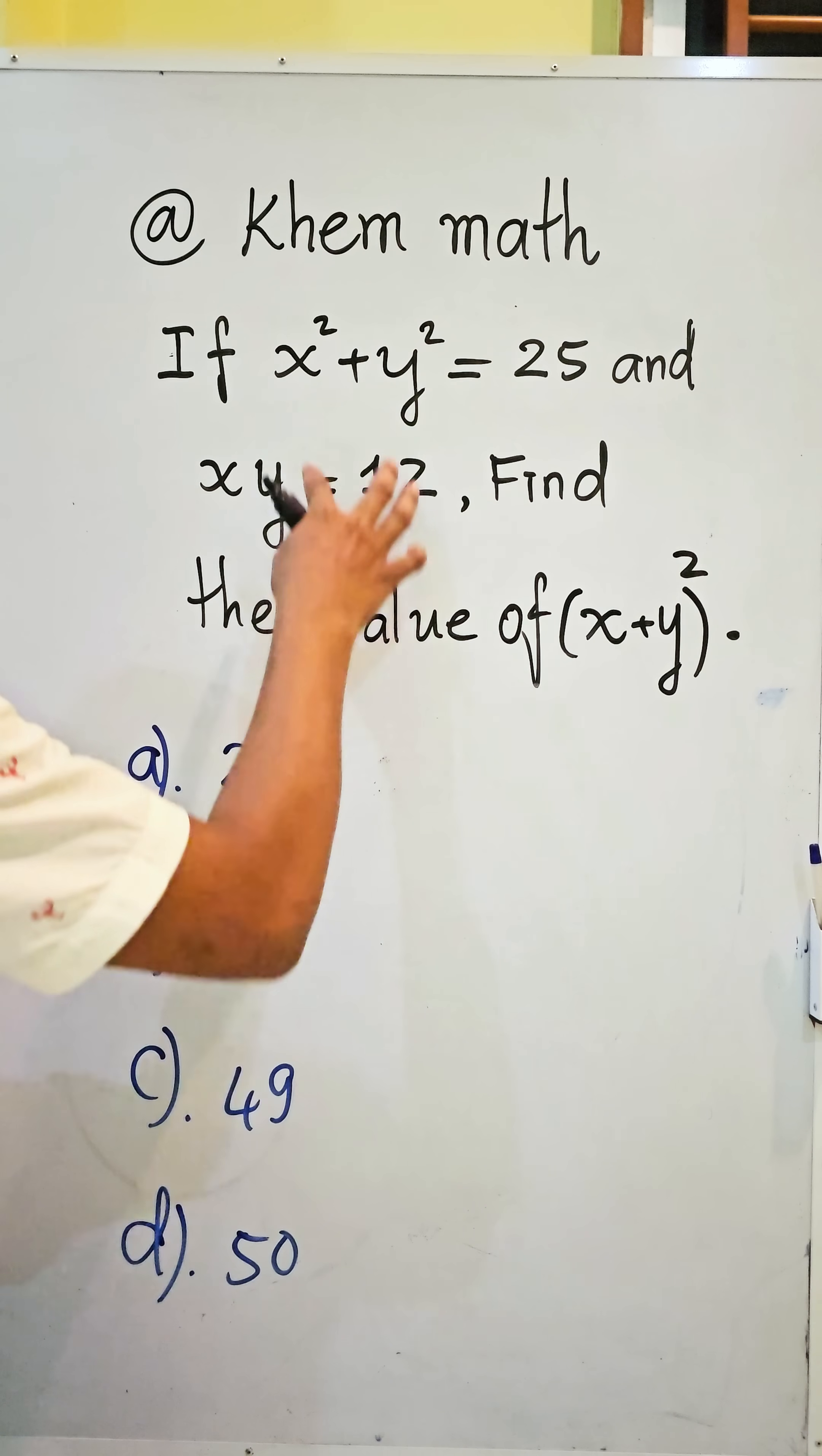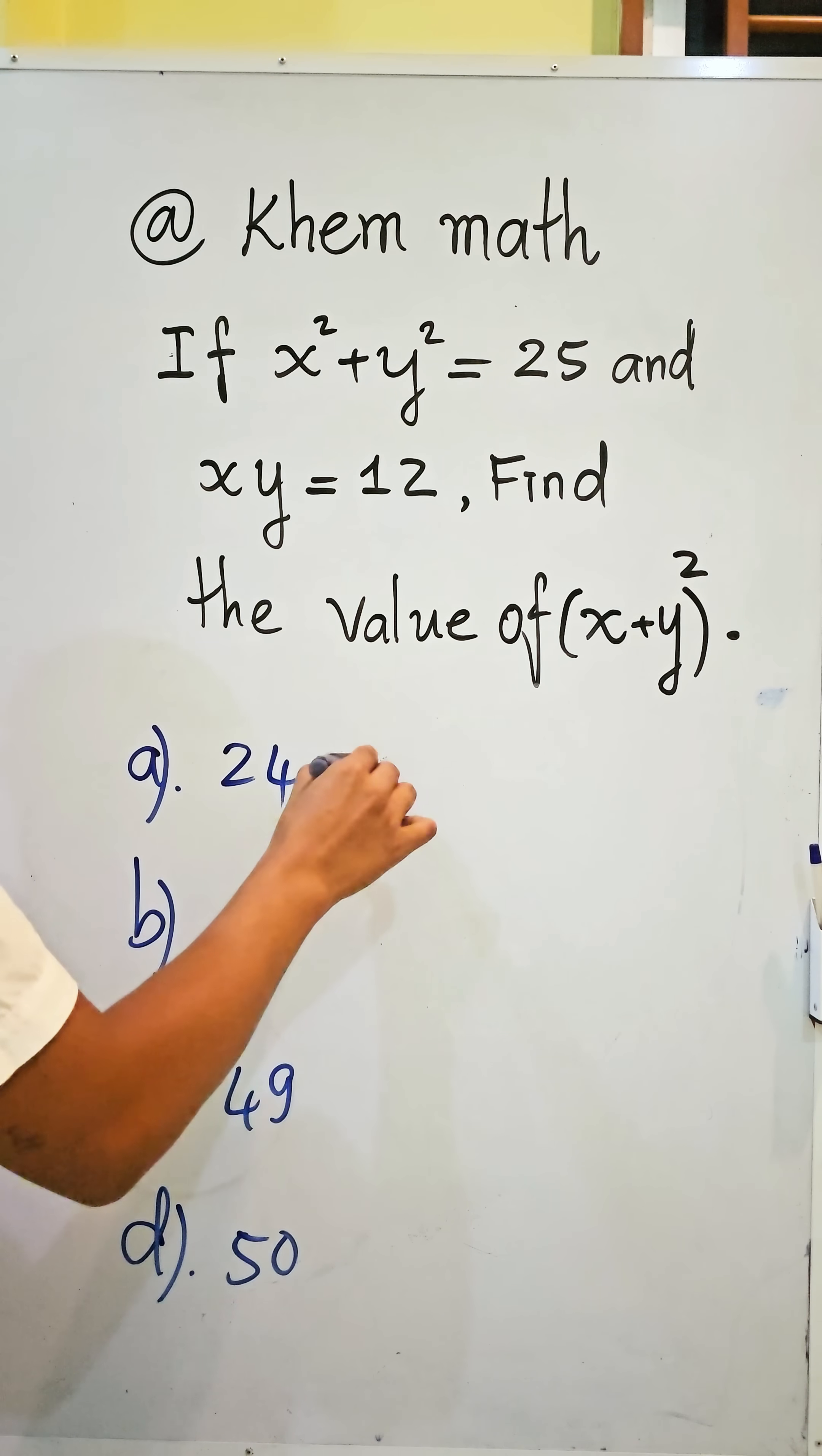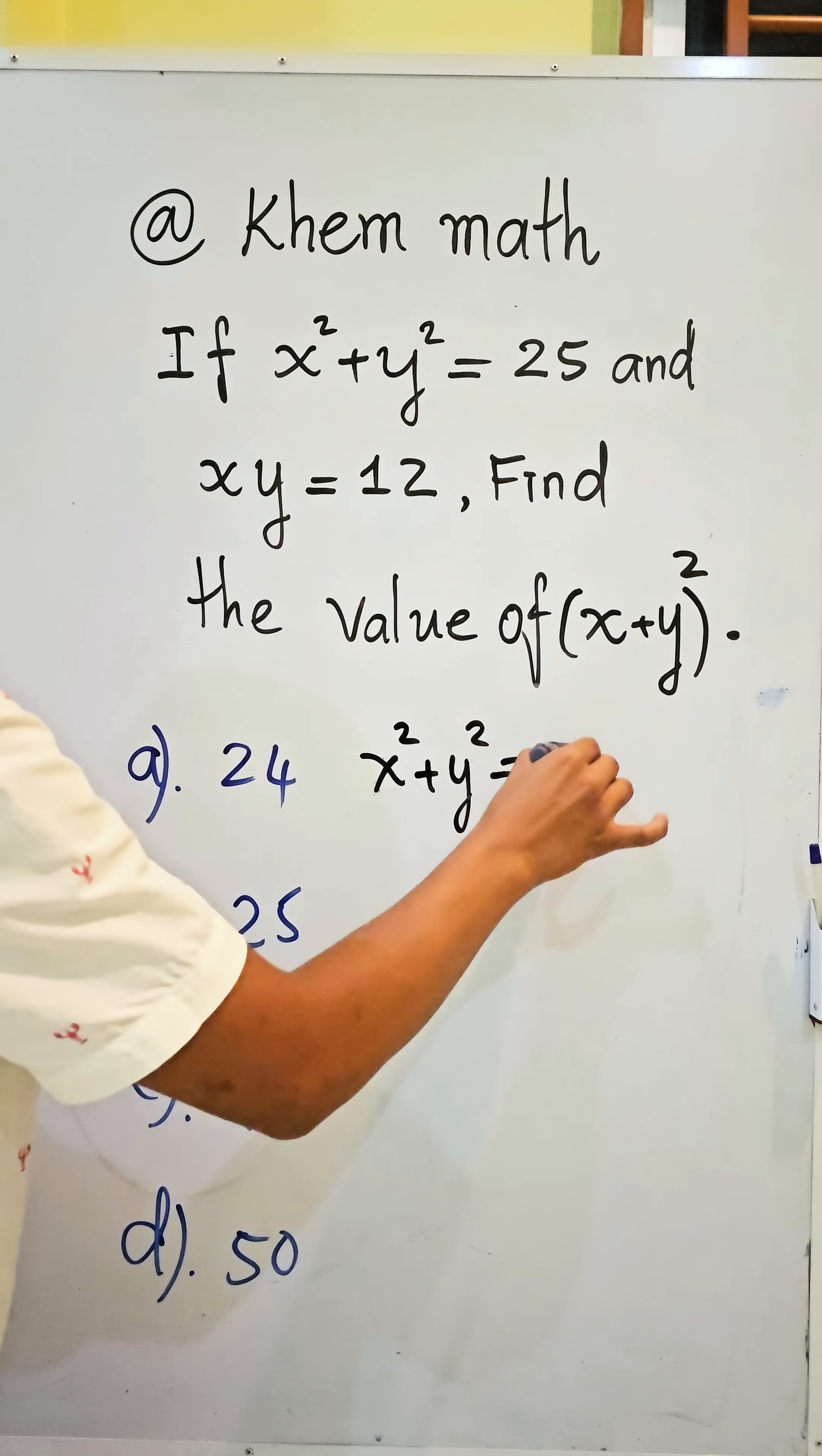Okay, now I use this equation. Here, x squared plus y squared equals 25.